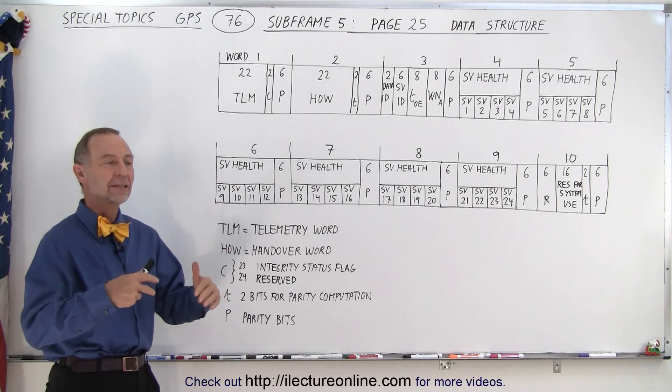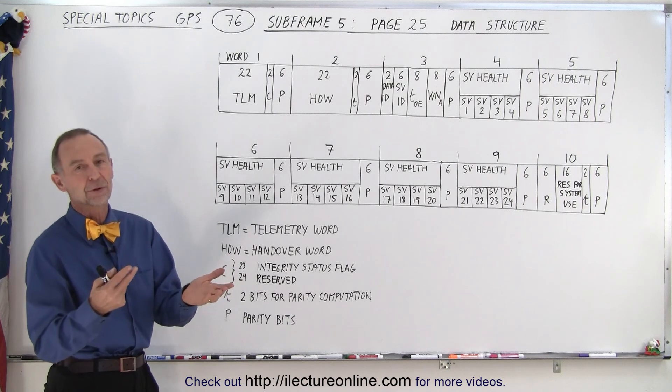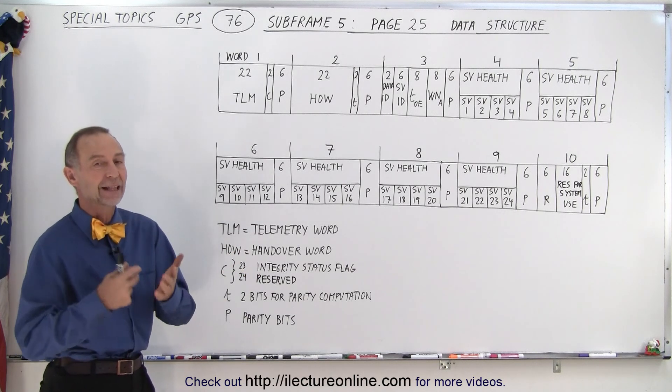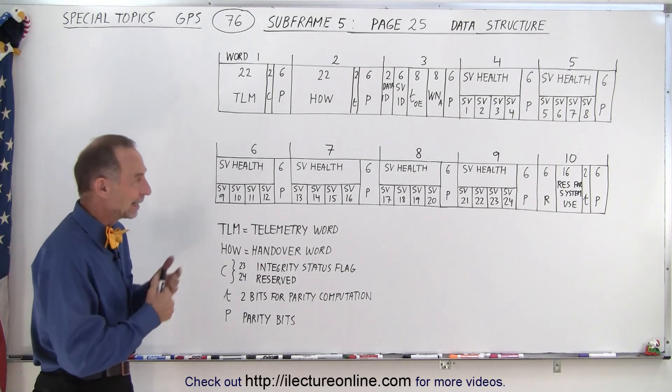Those 24 pages contain the parameters, the orbital parameters of 24 of the satellites, the first 24 satellites in the constellation.